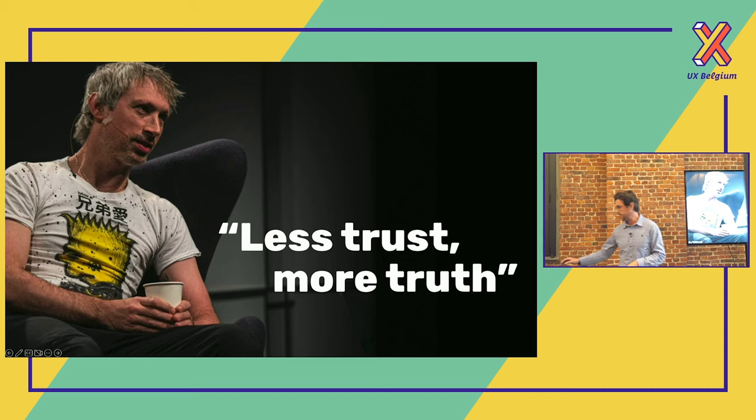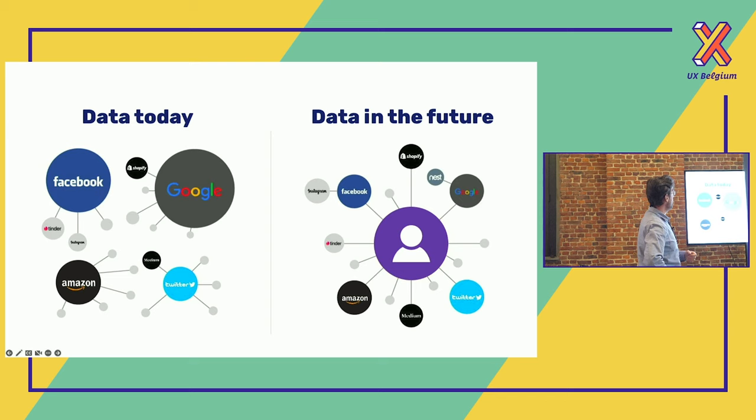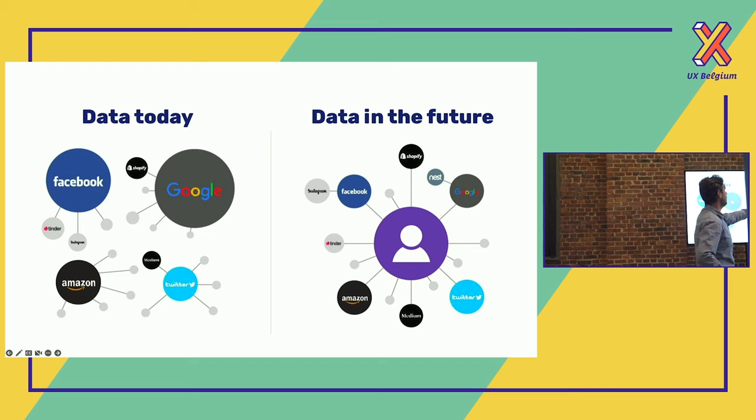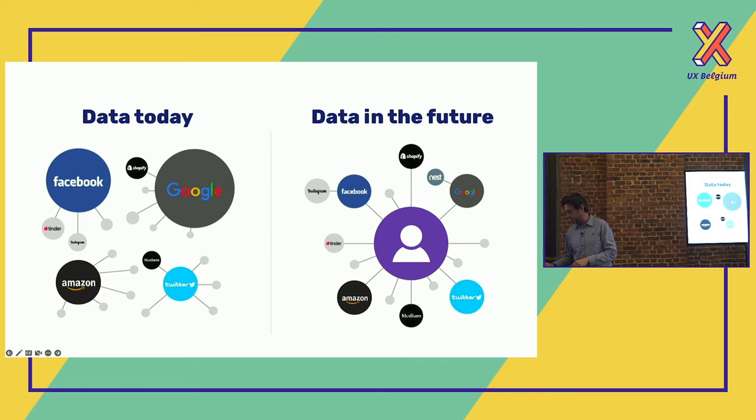What happens in this Web3 environment? Today, data-wise, we log in to Facebook, reproduce our data in Google, then again in Twitter or Amazon. In the future, we will be at the center of it all. We'll decide how to interact with all these platforms — that's the autonomy part.